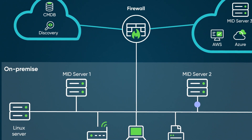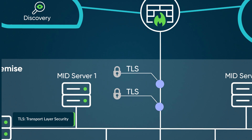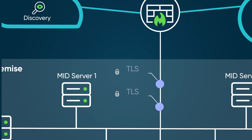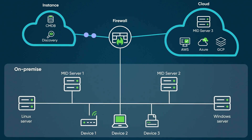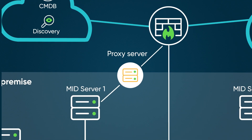All communications between the MID server and the instance are done securely via TLS and initiated from the MID server to the ServiceNow instance. This allows the MID server to connect to the instance directly, usually without having to open any additional ports on the firewall. Note that the MID server can also be configured to communicate through a proxy server if required.